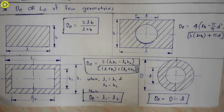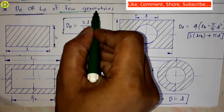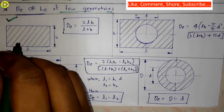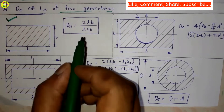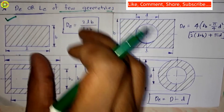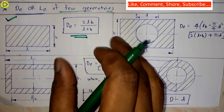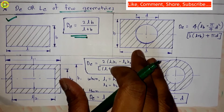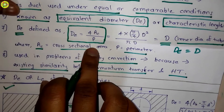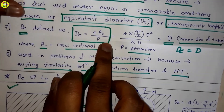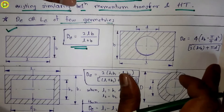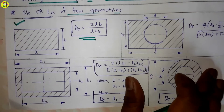The first geometry is the rectangular duct. For a rectangular duct, we derive the formula by using our general equation de = 4Ac / P that we have seen earlier.